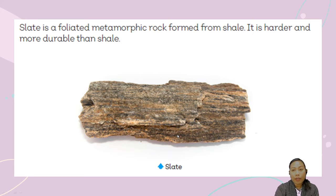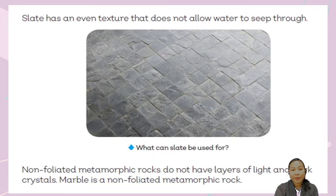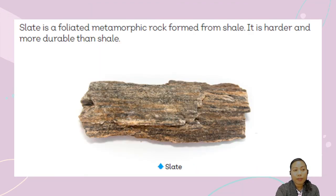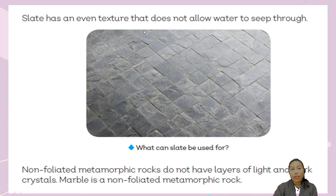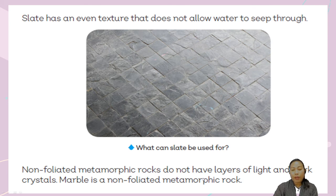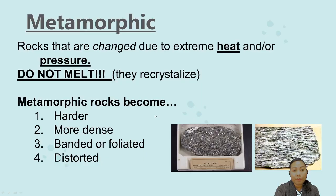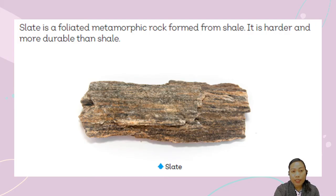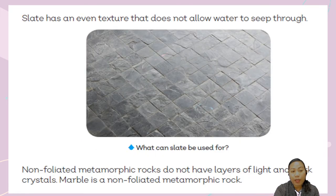Slate is harder and more durable. It also has an even texture that does not allow water to seep through. We can use slate for floor tiles. Non-foliated metamorphic rocks do not have layers of light and dark crystals. Marble is a non-foliated metamorphic rock. Slate is foliated, and marble is non-foliated.